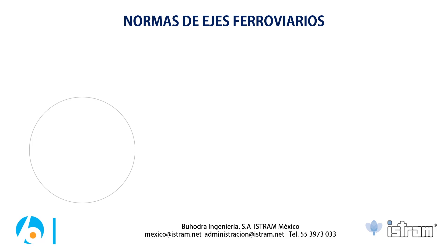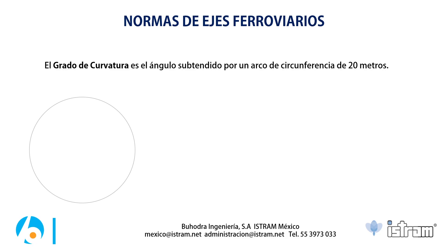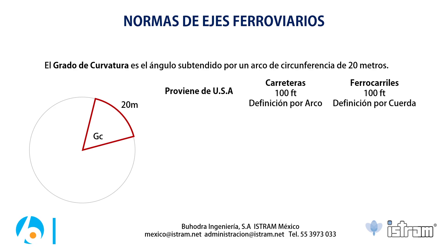¿Qué es la curvatura? En algunos países se trabaja no por radio sino por grado de curvatura. El grado de curvatura es el ángulo subtendido por una circunferencia de 20 metros — es decir, una porción de arco con 20 metros y el ángulo interno es el grado de curvatura. Esta definición proviene de Norteamérica: para carreteras solía ser en 100 pies con definición por arco, y para ferrocarriles era definición por cuerda.